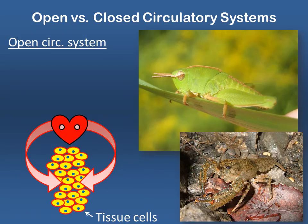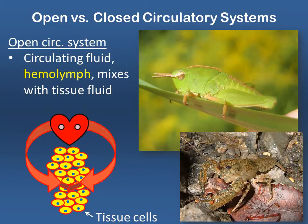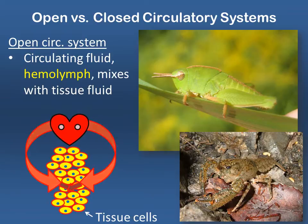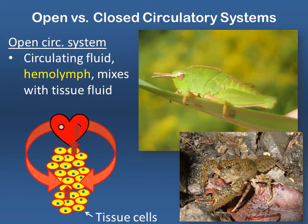For animals that do have circulatory systems, we need to distinguish between open and closed circulatory systems. Animals like this insect and this crustacean have open circulatory systems, where the fluid that circulates — called hemolymph — is pumped by the heart but actually leaves those vessels to mix with the fluid surrounding cells of all the tissues. Those cells are bathed in the hemolymph, which gets sucked back into the heart through small openings called ostea, allowing the hemolymph to be redistributed through the body.